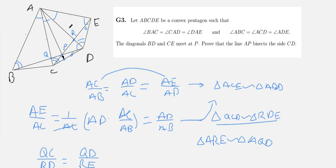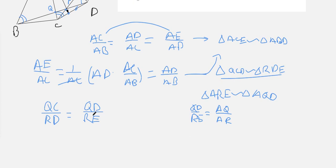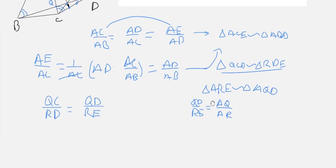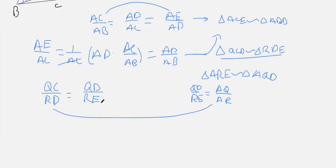And so, what we can say from this is that QD over RE, which are corresponding lengths in these triangles, which are also corresponding lengths. But we have that QD over RE is equal to both of these fractions or ratios. So, therefore, these ratios must also be equal. In other words, QC over RD is equal to AQ over AR.